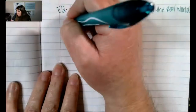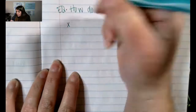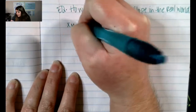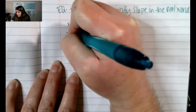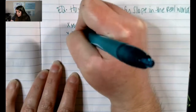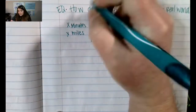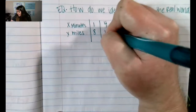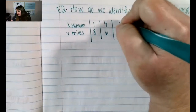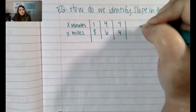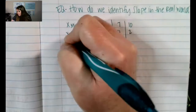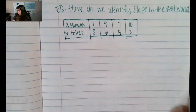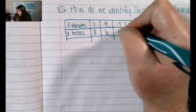Let's write out our table. We have x values — the x values are minutes — versus y values which are miles. In our table we had one and eight, then four and six. Our next set of values were seven and four, and last but not least we had ten and two. This table of values is going to help us determine about this comet and the way that it travels.